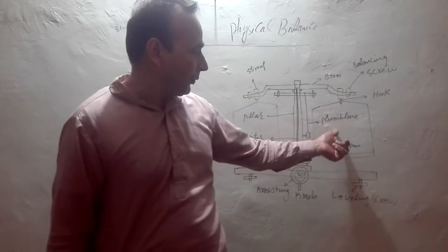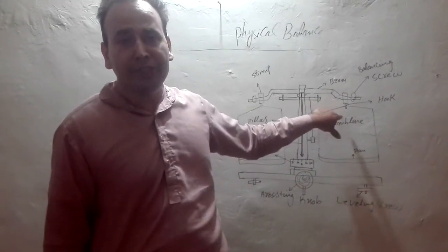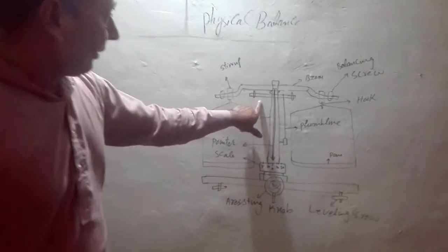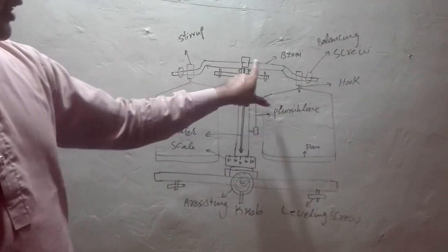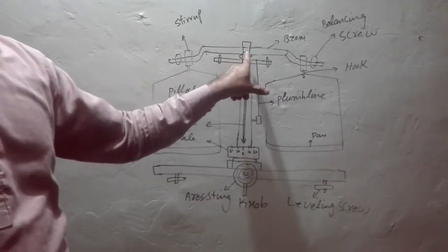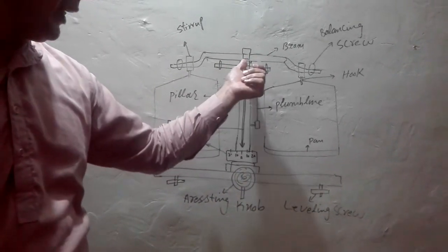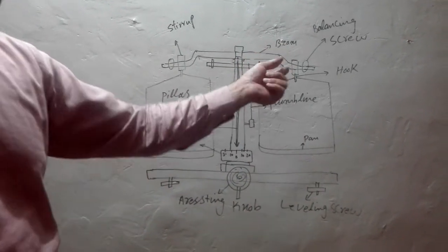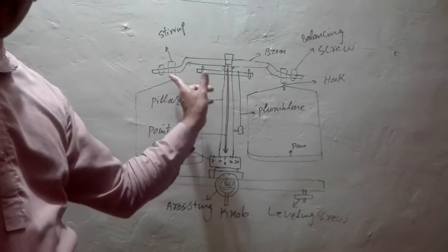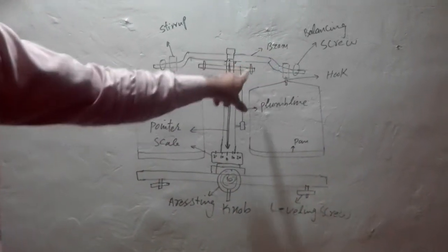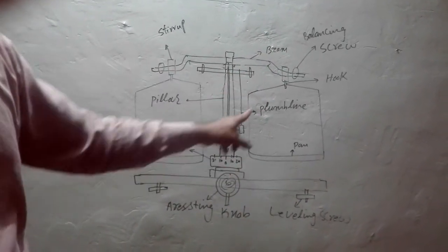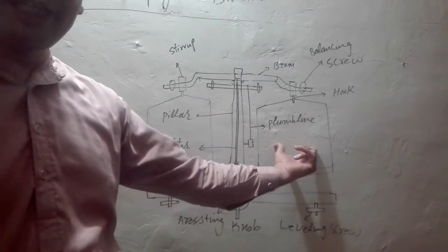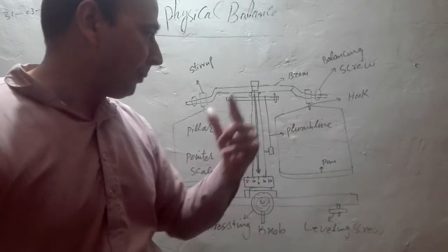First of all, let me explain the construction of this physical balance. If you look at this diagram clearly, this is the beam. This beam is resting at the fulcrum. Fulcrum is a point at which something rotates, so this beam can rotate on either side — left or right. You can also see here these are the two big pans: one pan, second pan — left pan, right pan.